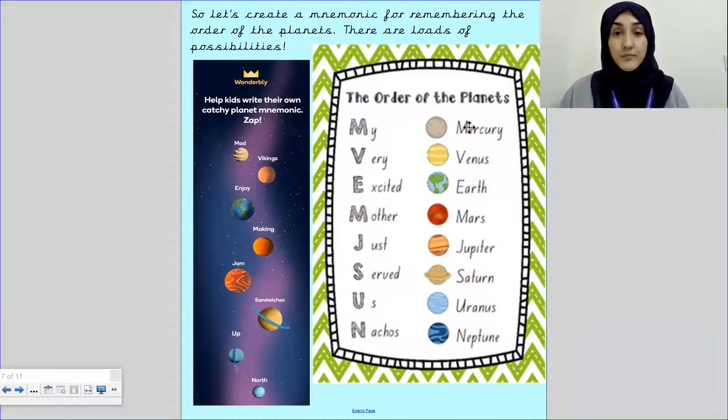Now, can you read this mnemonic right here? This is, look, we've got M for Mercury, V for Venus, E for Earth, M for Mars. Now there are two M's. There are two M's because we have two planets that start with the M's. And that is Mercury and Mars.